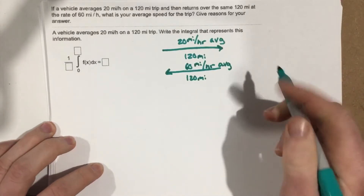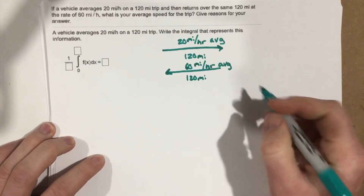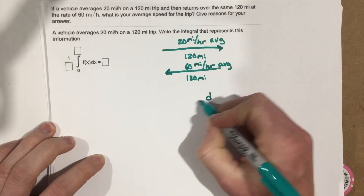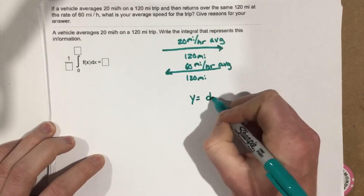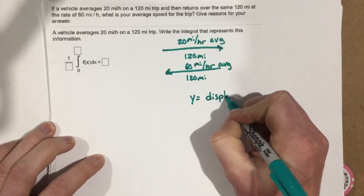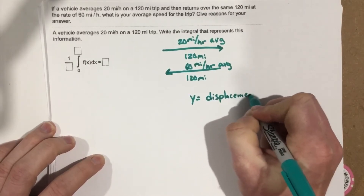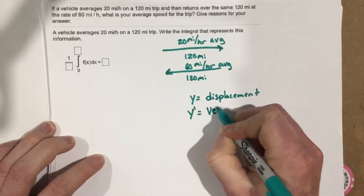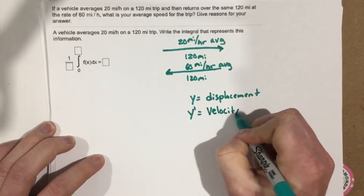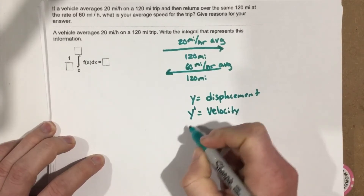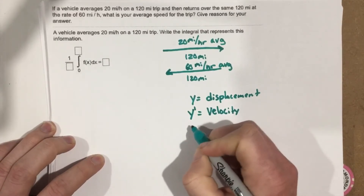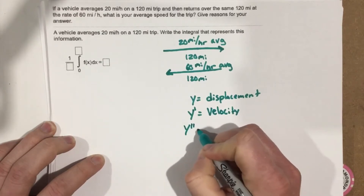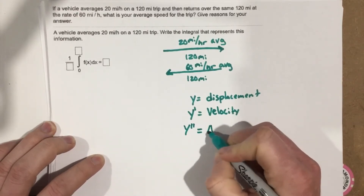A few things I want to talk about quickly. We know that if we take a displacement equation — let's say y equals displacement — and we take the derivative, we get a velocity equation. This is from section 3.4. If we take the derivative of the velocity equation, which is the double derivative of displacement, we get the acceleration equation.